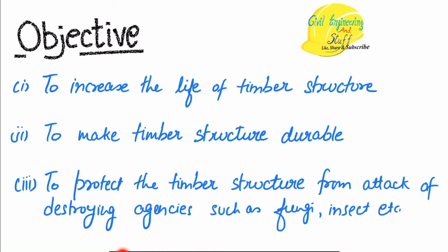Let us start our discussion on the objective of applying a preservative over the timber surface. The ultimate aim is to increase the life of the timber structure. By applying preservatives, we want to make our timber structure more durable — that is, resistant towards adverse conditions and safe from attack of fungus and insects. The various kinds of fungus and insect attacks have been discussed in the previous lecture series, the link of which you can find in the description box.